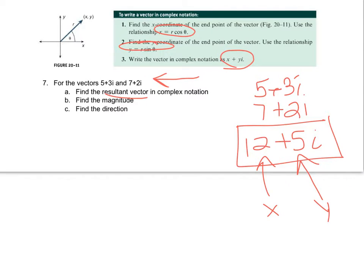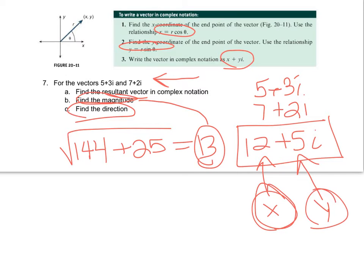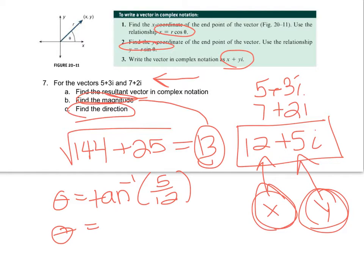If they ask for the magnitude of the resultant, since you know x and y, use the formula: take the x-value of 12 and square it, the y-value of 5 and square it, add the results — which is 169 — and square root, giving 13. If they ask for the direction, use inverse tangent of y over x: inverse tangent of 5/12 gives approximately 22.6 degrees. Don't let the imaginary notation be scary — it's really the same thing, just a different look.